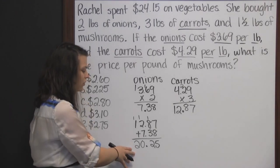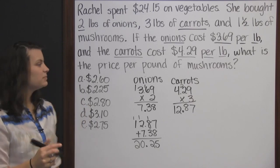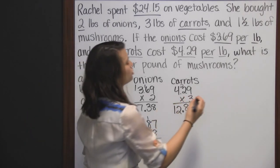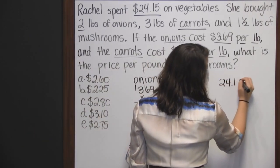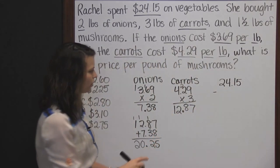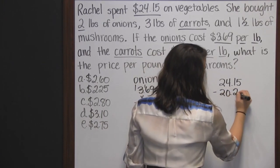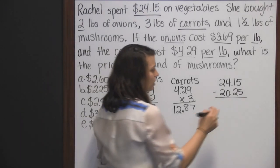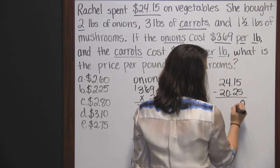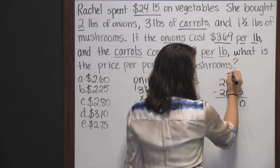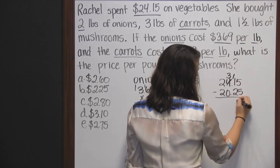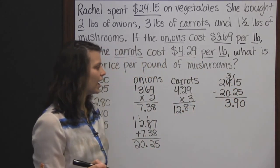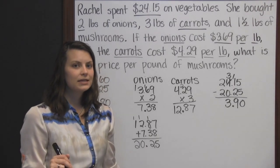Knowing that will help us find out what amount was left to be spent on the mushrooms. Since her total spent on all vegetables is $24.15, I can take that total and subtract twenty dollars and twenty-five cents — spent on onions and carrots — and what I'll have is the amount she spent on mushrooms. Lining up our decimals: five minus five is zero, can't take two from one so I borrow — eleven minus two is nine, bring decimal down, three minus zero is three. She had three dollars and ninety cents to spend on mushrooms.